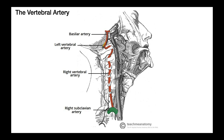But any way you look at this, whether you're looking at the right side or the left side, the vertebral artery always branches off of the subclavian artery. So this is the right subclavian artery, which makes this the right vertebral artery. The only thing you have to remember is where the subclavian artery comes from on either side.